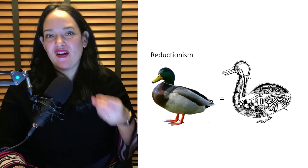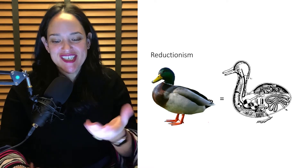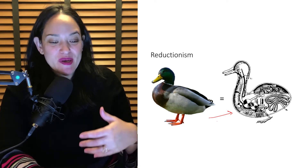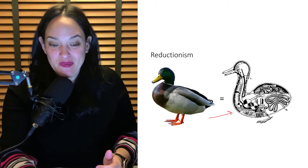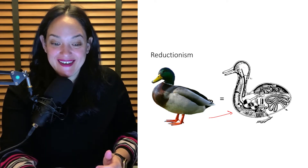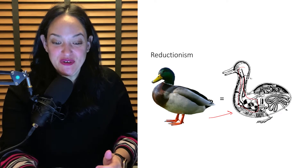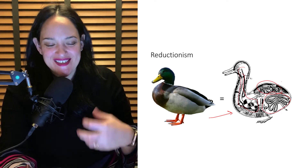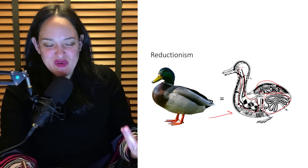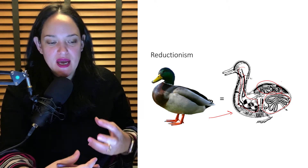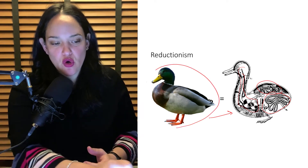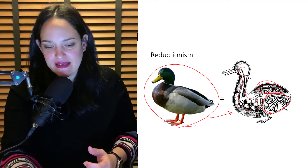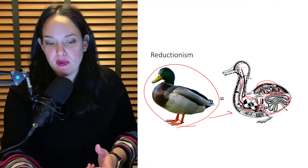To really hammer in this concept of reductionism, here is an example: this is a duck, and we could look at a duck by breaking it down to all of its little machinery and looking at the different parts. Obviously this is not truly what a duck looks like inside, but in reductionism we don't consider the whole — we just look at it as the sum of its parts.